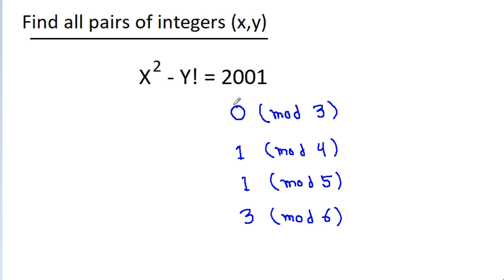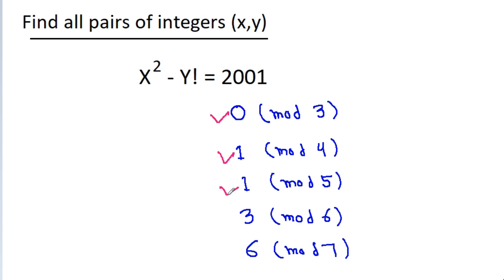And if we divide 2001 by 7, then the remainder will be 6, so it is equivalent to 6 mod 7. Now, 0 and 1 are perfect squares, and 3 mod 6 is equivalent to 9 mod 6, and 9 is also a perfect square. So these are the quadratic residues.